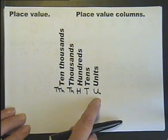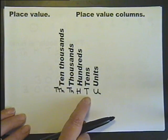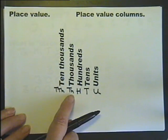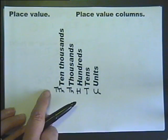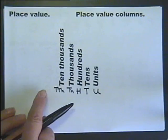We can see our other columns building up: units, tens, hundreds, thousands, tens of thousands, hundreds of thousands, and millions.